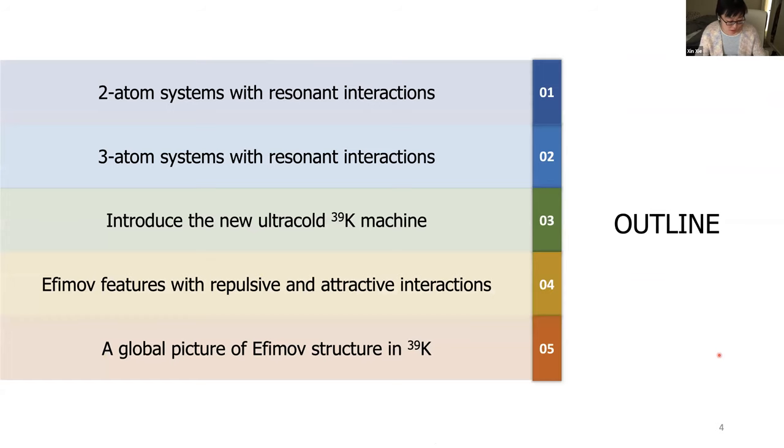So as the outline, I will first talk about some background knowledge about two-atom and three-atom systems with resonant interactions. And then I will introduce our potassium machine, how we cool down potassium 39, and what are the challenges. And then I will present some recent results on the measurement of Efimov features in potassium 39 for both repulsive and attractive interactions. And in the end, I would like to use some animations to show how I understand the global picture of the infrastructure by combining the features in both interaction regimes.